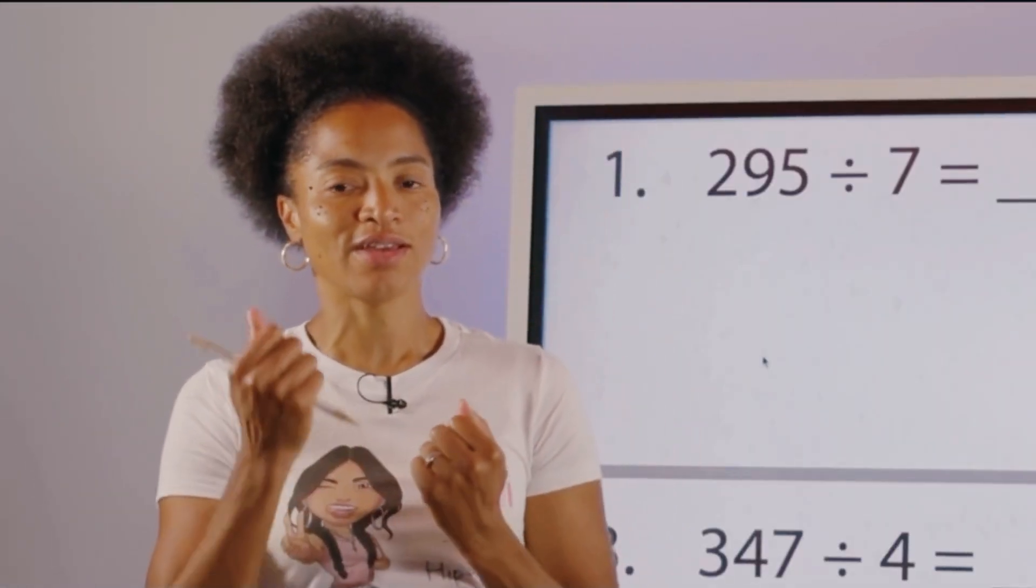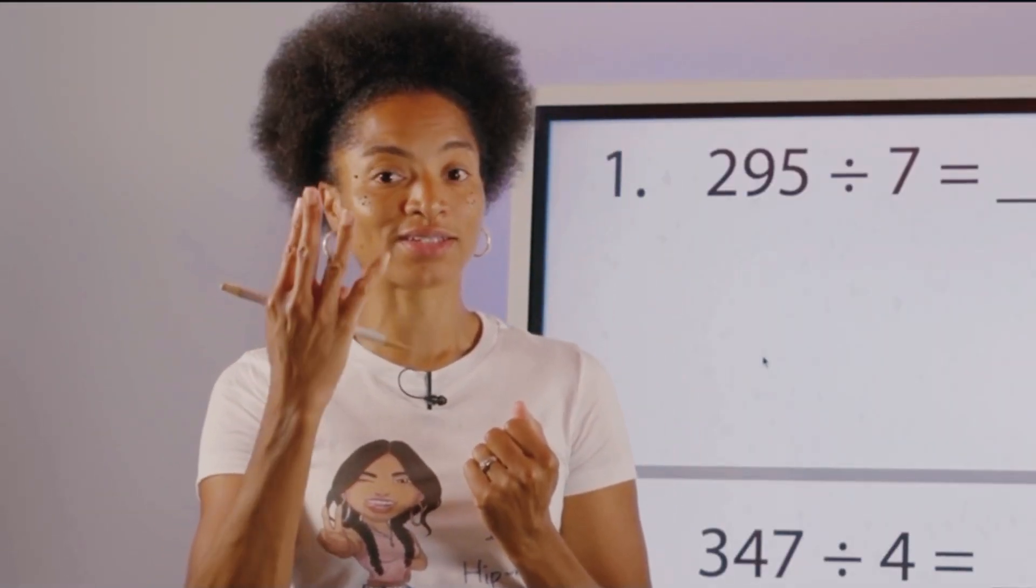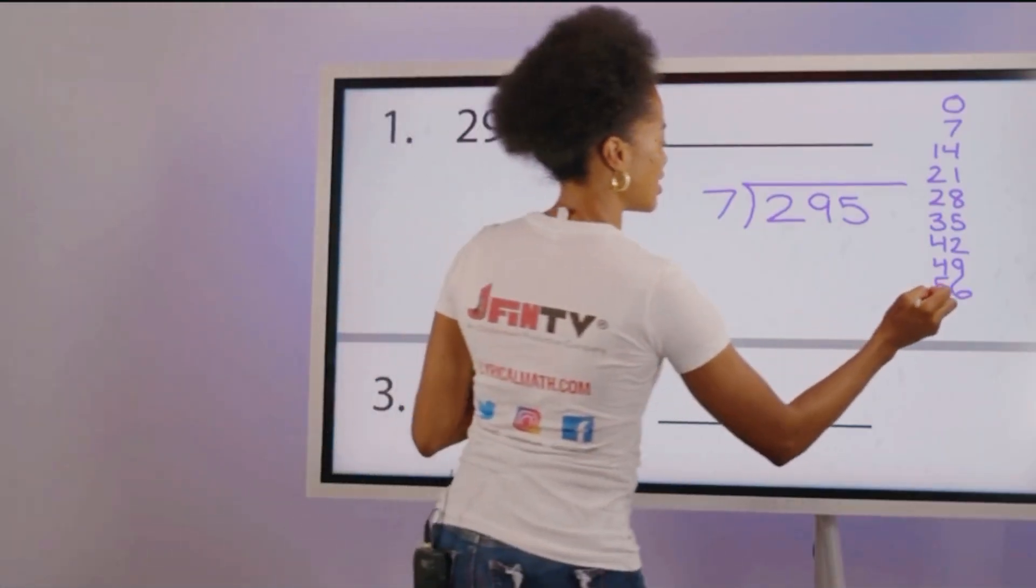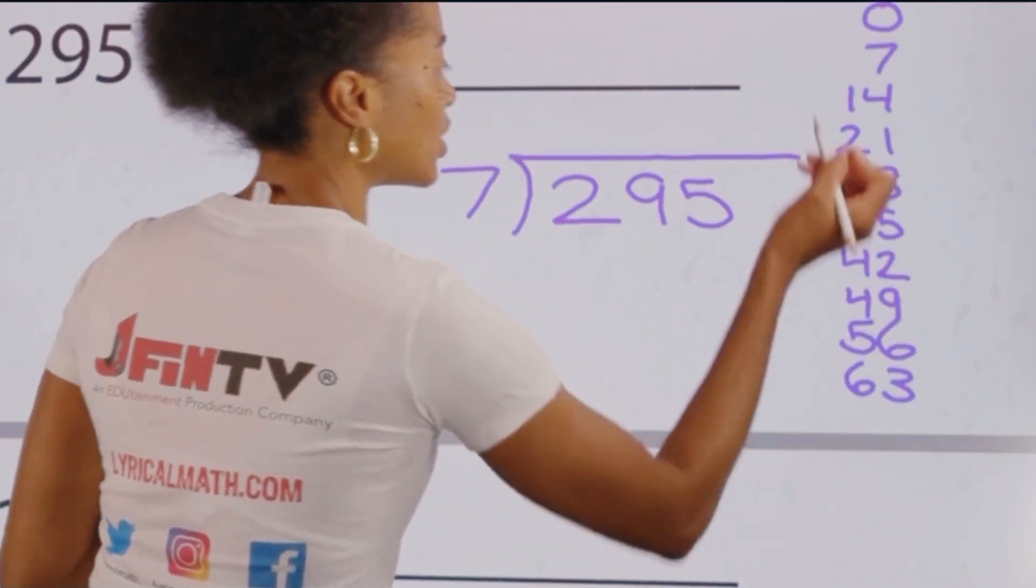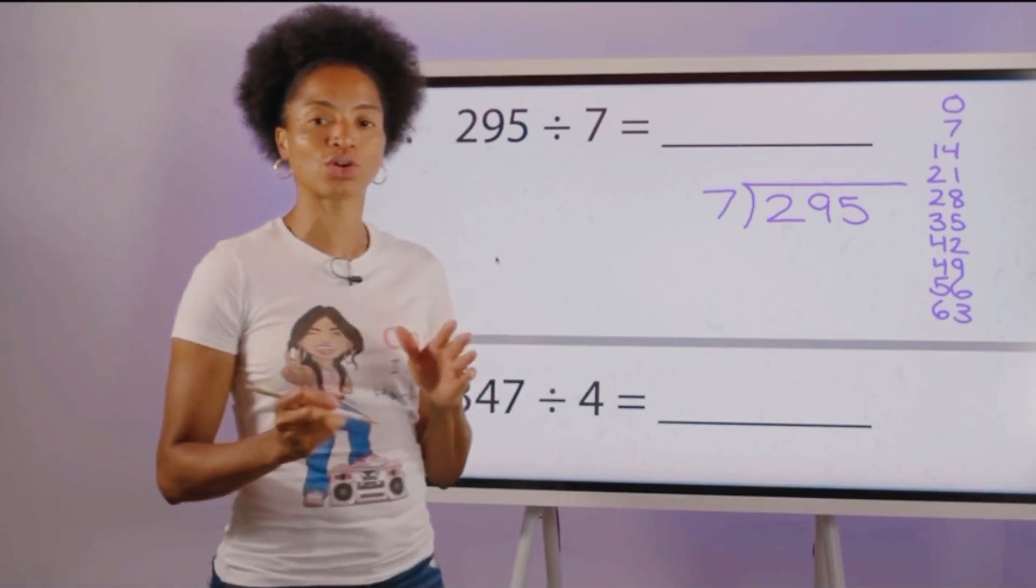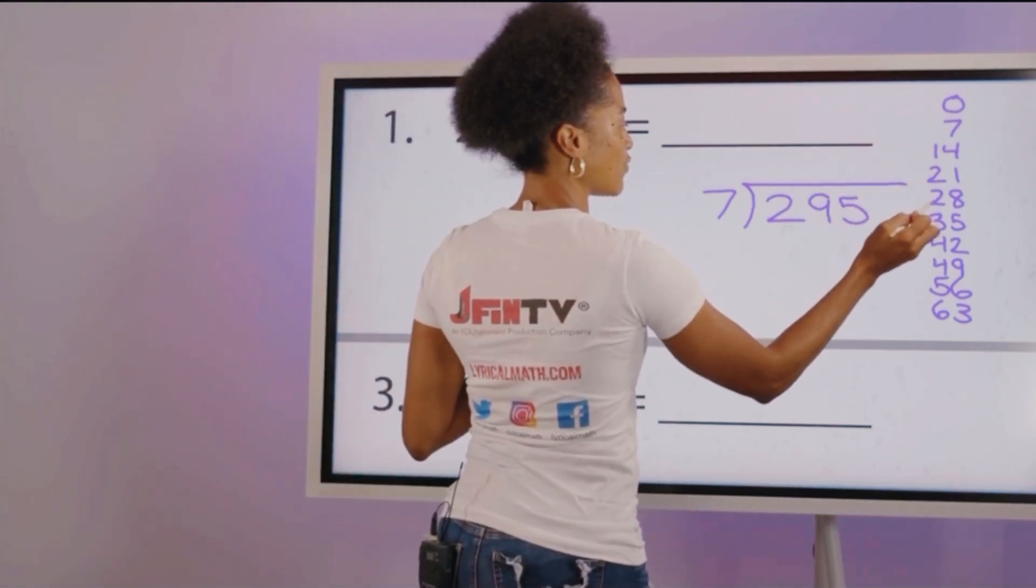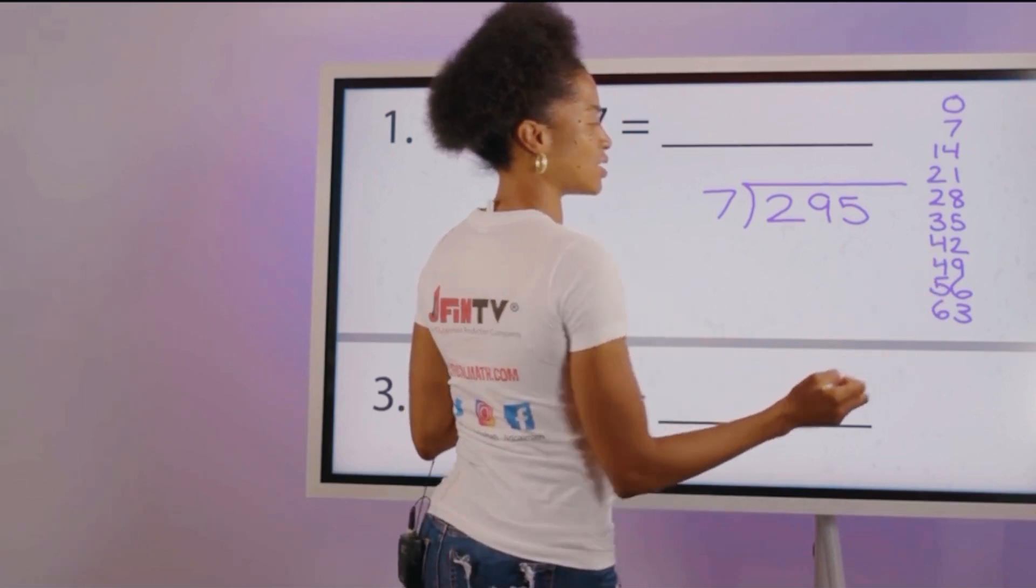We want to keep adding 7 so we get a total of 10 numbers. We have 1, 2, 3, 4, 5, 6, 7, 8, 9, 10 numbers. That lets us know we're good to go.